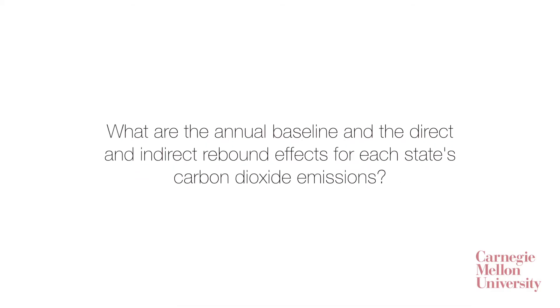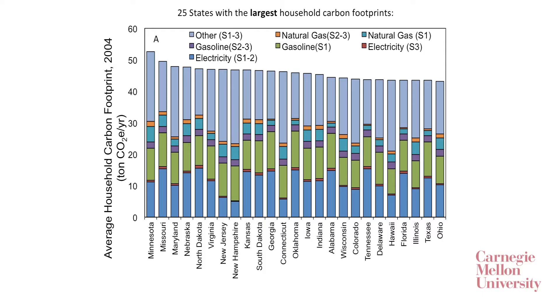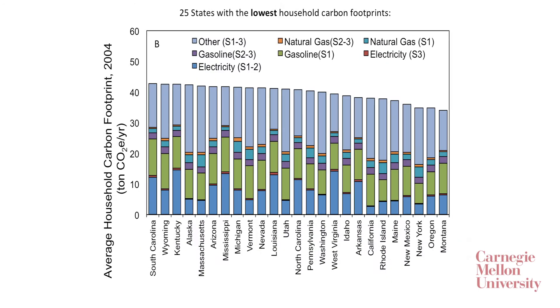So what are the annual direct and indirect rebound effects for each of the 50 states? The first step in assessing the magnitude of those rebound effects is to establish a baseline. Our first step was to compute the household carbon footprints for each of the 50 states. We found that the carbon footprints differ quite substantially from state to state, due in particular to differences in grid emissions factors and also household patterns of consumption.